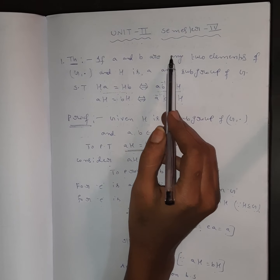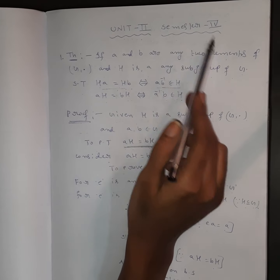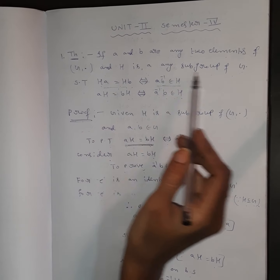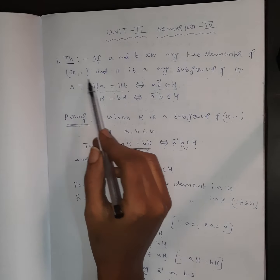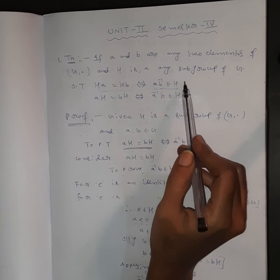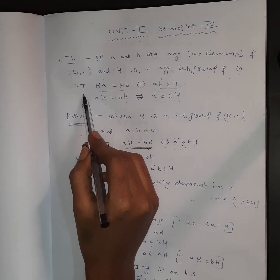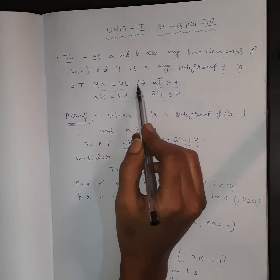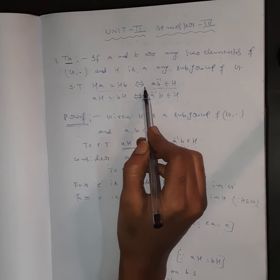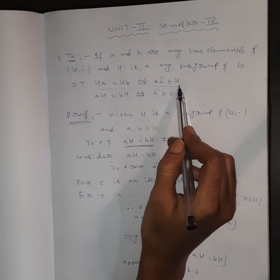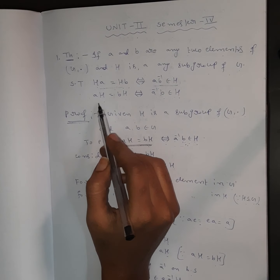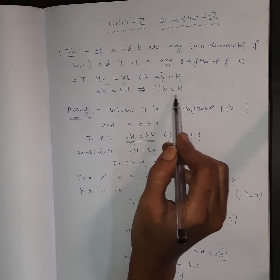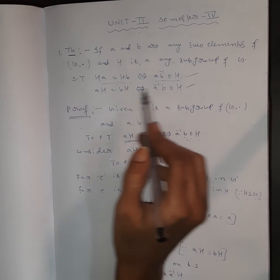Welcome to Sikshan Maths Academy. In fourth semester, the first theorem states: if A and B are any two elements of G and H is any subgroup of G, then HA equals HB if and only if AB⁻¹ belongs to H. The second part: AH equals BH if and only if A⁻¹B belongs to H. We will prove both parts.